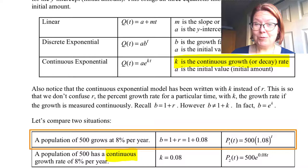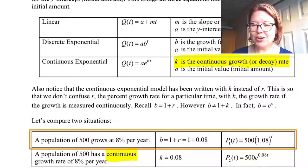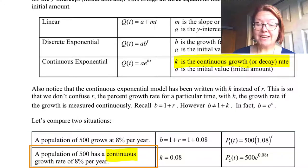For the first scenario, the population of 500 growing at 8% per year, we're going to find b, the growth factor. That's 1 plus r, where r is the growth rate. In this case, that would be 1 plus 0.08. That gives us a model, P₁(t) equals 500 times (1.08) raised to the t power.